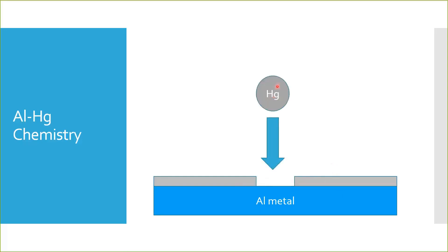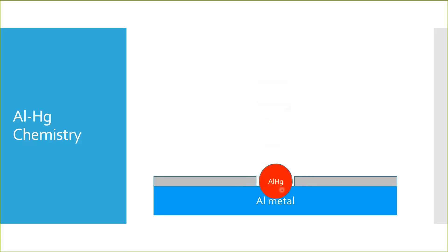Mercury, which is metallic in nature, will occasionally find this pit and attach itself to the metal. When it does so, it forms the amalgam and actually displaces the base metal — in this case, aluminum.